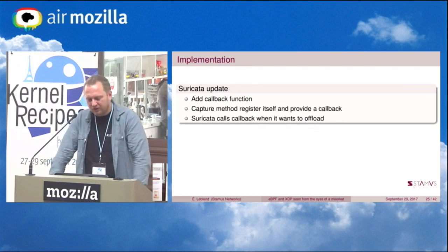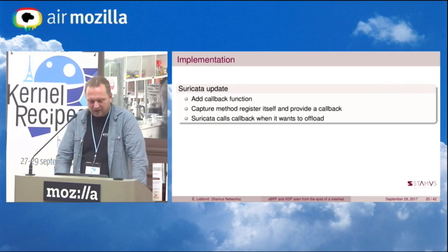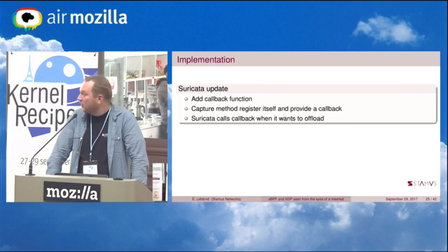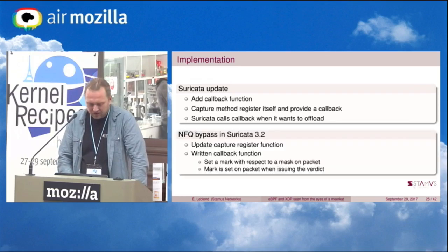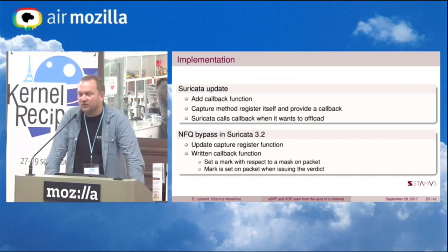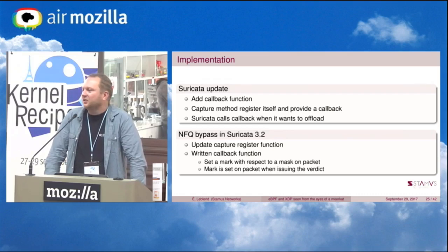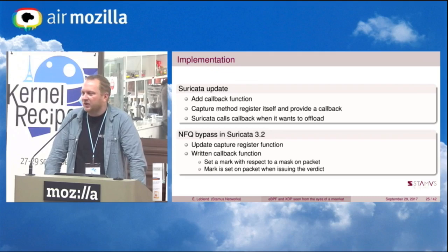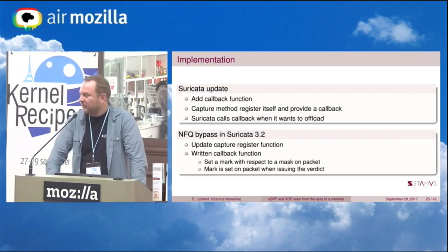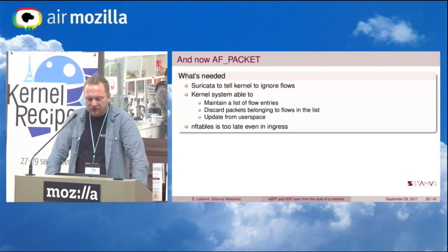On Suricata, the implementation was quite simple — it's just a callback function called when we want to bypass — but the main work is done on the capture method side. The first and easy one was the NFQ bypass, the Netfilter queuing for IPS mode. For this one it was really simple: just setting a mark, then tuning your iptables or nftables ruleset to not send packets with that mark to Suricata.